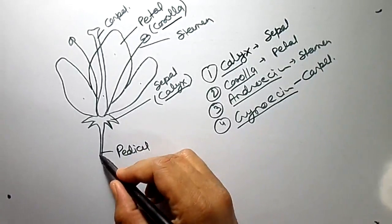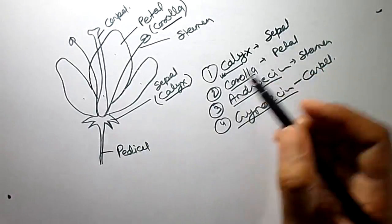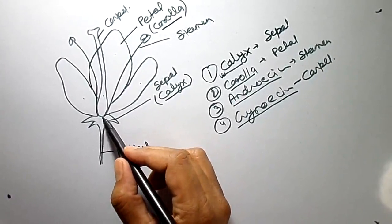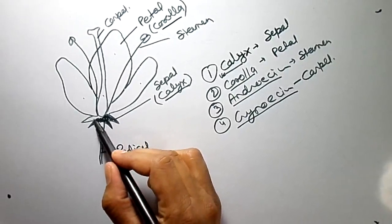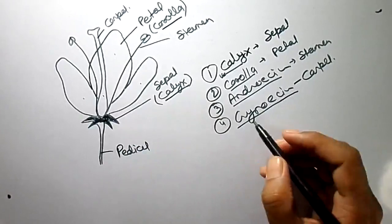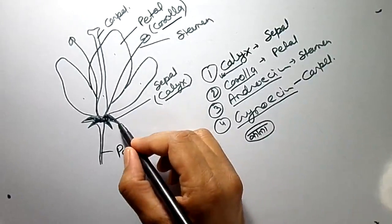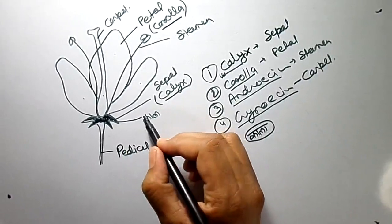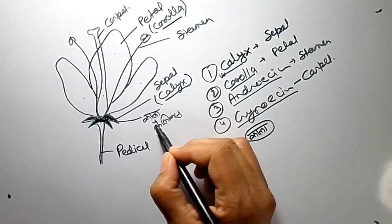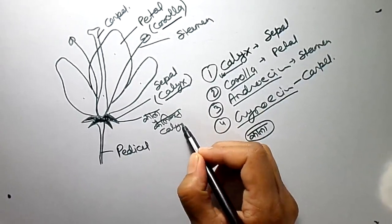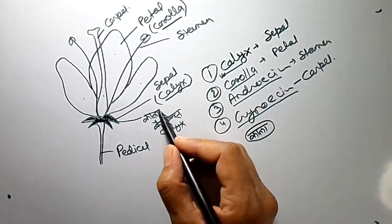Now, how can we memorize this? So the first one is Calyx. Let's make it black — 'Kala' means black. So we can memorize Kala for Calyx. Kala for Calyx.